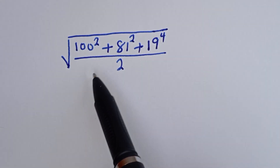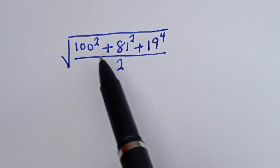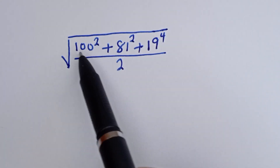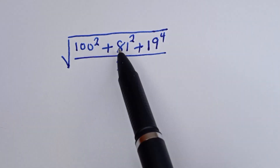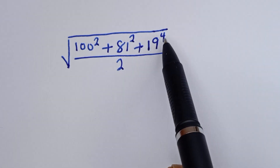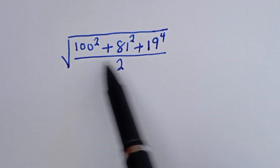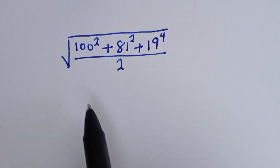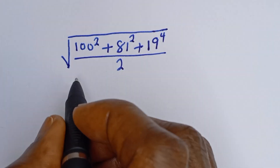Hello. How to simplify this nice math problem: square root of 100 squared plus 81 squared plus 19 to the power of 4, divided by 2 — without using a calculator.